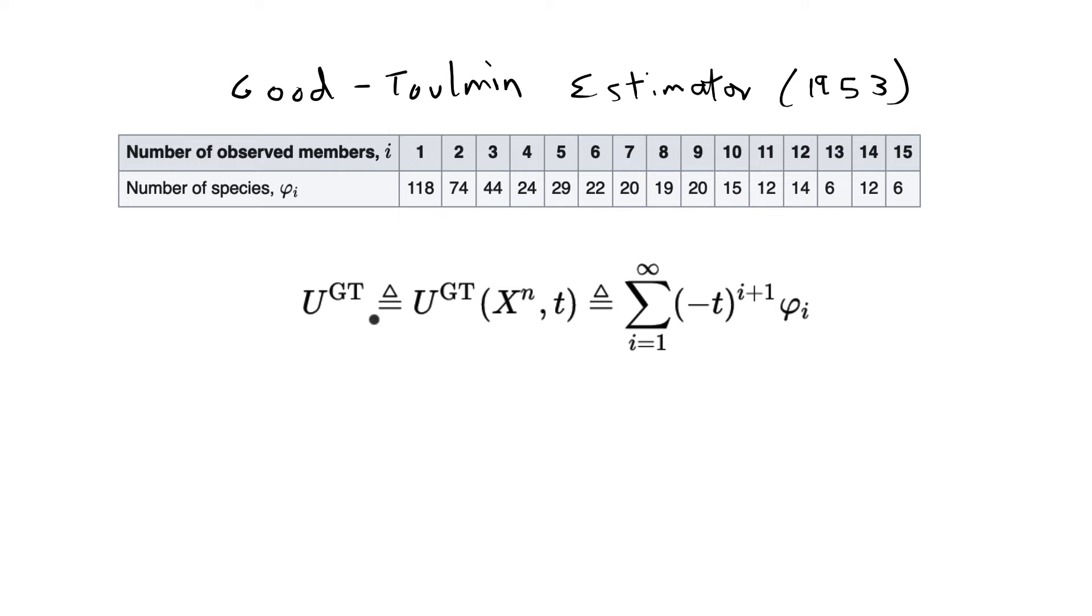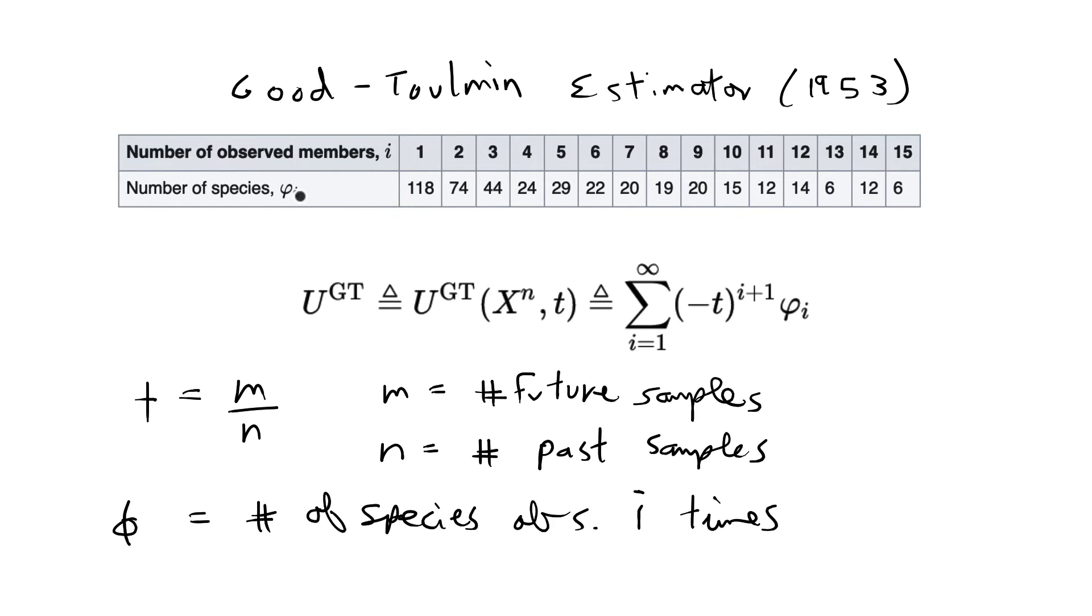Pulling the Good-Toulman estimator equation just from Wikipedia, and also pulling this table from Wikipedia, the estimator is defined as follows. The number of unseen species u is defined as or equal to the sum of negative t to i plus 1 times phi i for i equal to 1 to infinity. So it's an infinite sum, and in this case t is equal to m divided by n. m is going to be the number of future samples you want. So how much more are you going to keep sampling, whereas n is equal to the number of past samples. In our case, we have 2,029 samples already, and phi is equal to the number of species observed i times.